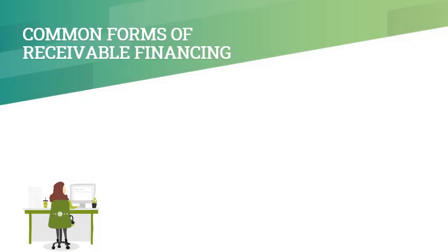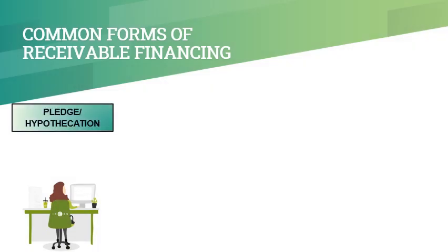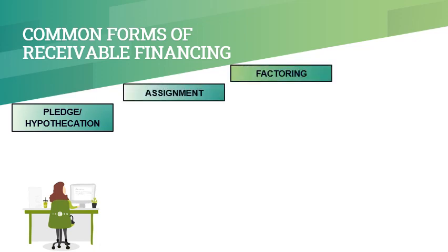The four common forms of Receivable Financing are Pledge or Hypothecation, Assignment, Factoring, and Discounting of Note.